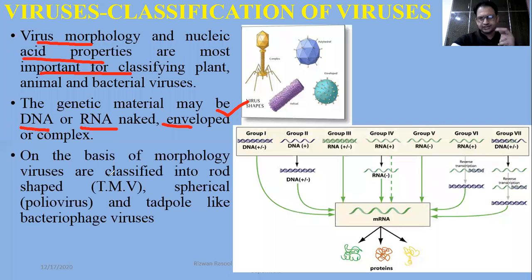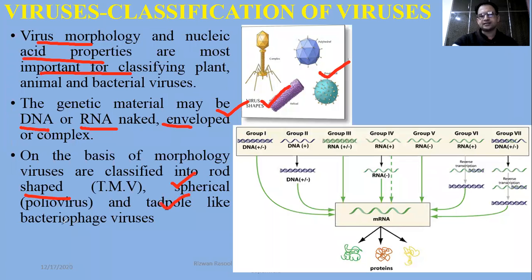On the basis of morphology, we classify viruses by shape. For example, rod-shaped viruses such as tobacco mosaic virus, spherical viruses such as poliovirus, and tadpole-like viruses such as bacteriophage viruses.